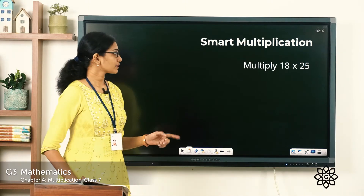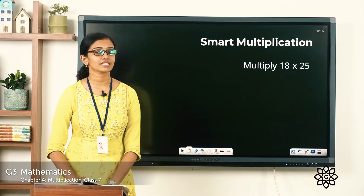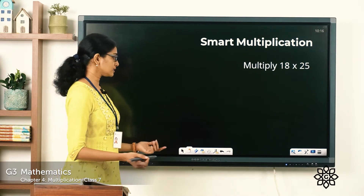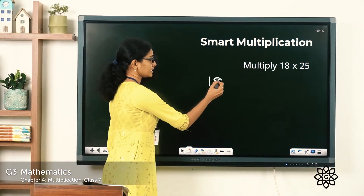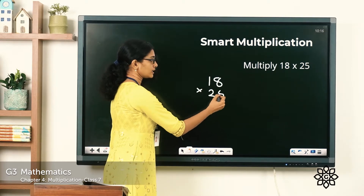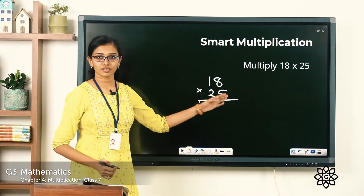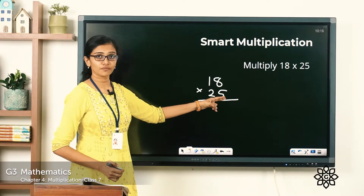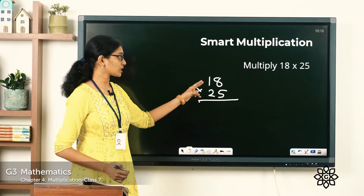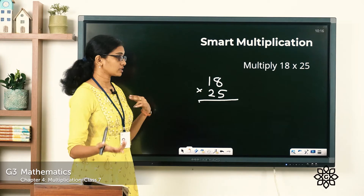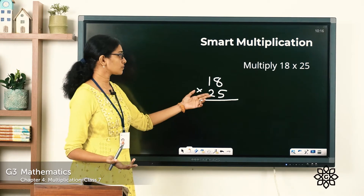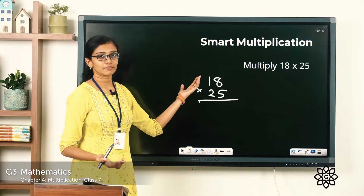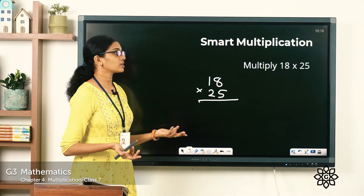So we have a question here: multiply 18 into 25. How do you usually multiply this? You write the multiplicand and the multiplier in proper columns. Then you start multiplying the ones first — you multiply the ones digit of the multiplier with each digit of the multiplicand to get the first product. Then you proceed with the tens digit of the multiplier with each digit of the multiplicand, and it goes on like that, right?